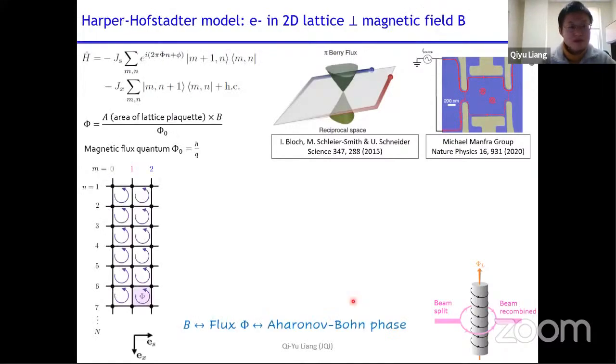So our approach is to start with the Harper-Hofstadter model. This model has two terms, the hopping term along the two dimensions. And notably, the hopping along one dimension has a phase. It's a complex hopping such that when the particles go around a lattice plaquette, it will pick up an Aharonov-Bohm phase. And this phase is proportional to the magnetic flux. And if you look at this model, you will see that this is the only way that the magnetic field entering this model. And so basically, if you can engineer an Aharonov-Bohm phase, then you don't need to actually apply a real magnetic field. And that is the approach we are taking.